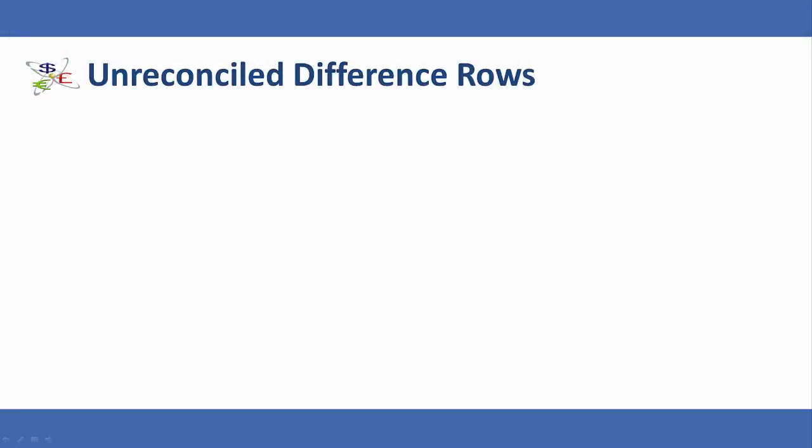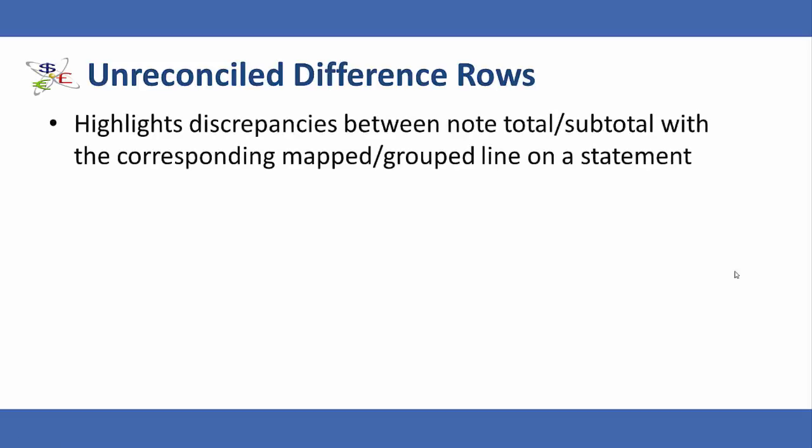An unreconciled difference row highlights discrepancies between note totals and subtotals with the corresponding mapped and grouped line on a statement. It hides itself from view if no discrepancies exist, or if the rounding tolerance has not been exceeded.